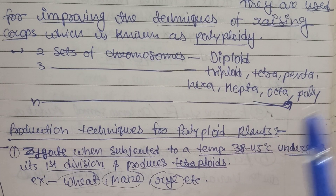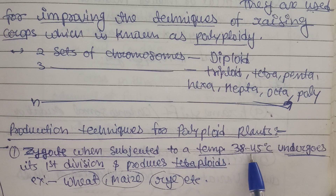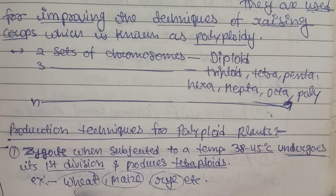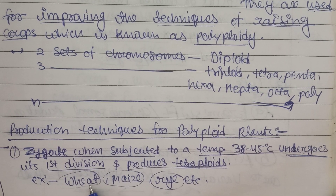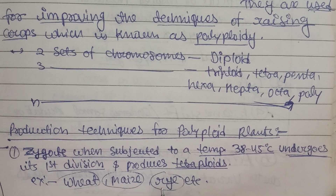When we talk about production techniques for polyploid plants, the first technique involves a gizode: when subjected to a temperature of 38 to 45 degrees centigrade, it undergoes its first division, multiplication starts, and it produces tetraploids. These techniques can be used in wheat production, maize, and other crops to increase and raise the percentage yield.